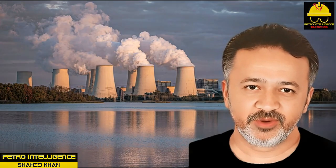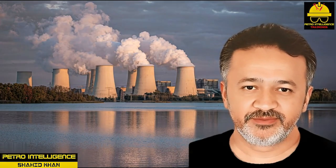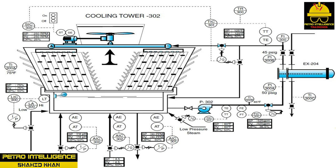Simple startup procedure for cooling tower system: step 1 — notify your supervisor and all concerned about startup, including downstream process technicians, I&E, engineering, maintenance, etc. Step 2 — ensure all safety hazards are secured: trash, locks, old permits, etc.